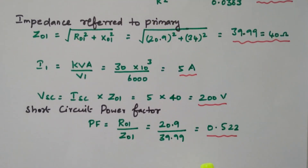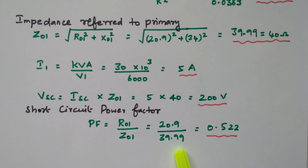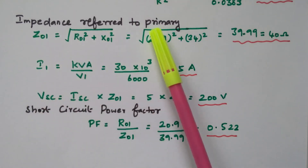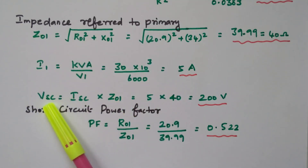Now we can find the power factor. The formula is R01 divided by Z01 — that is 20.9 divided by 39.99 — which gives 0.522. In this problem we calculated the turns ratio, equivalent resistance referred to the primary, equivalent impedance referred to the primary, current, short-circuit voltage, and finally the power factor under short-circuit condition. Subscribe the channel for more videos and notifications. Soft copy of this material is available in the drive; link is given in the description box. Thank you for listening.